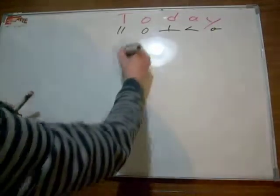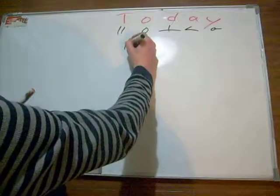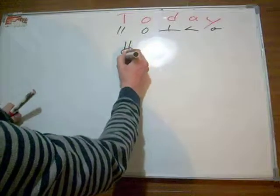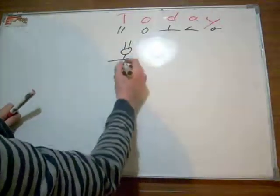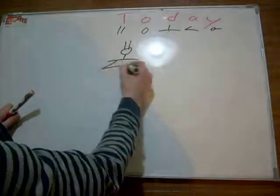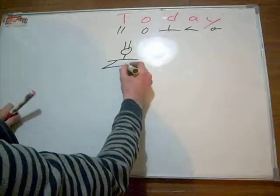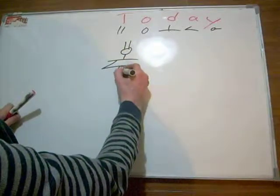Let's have a look at the word today. The simplest way to connect these: T, O, D, A, and then Y.